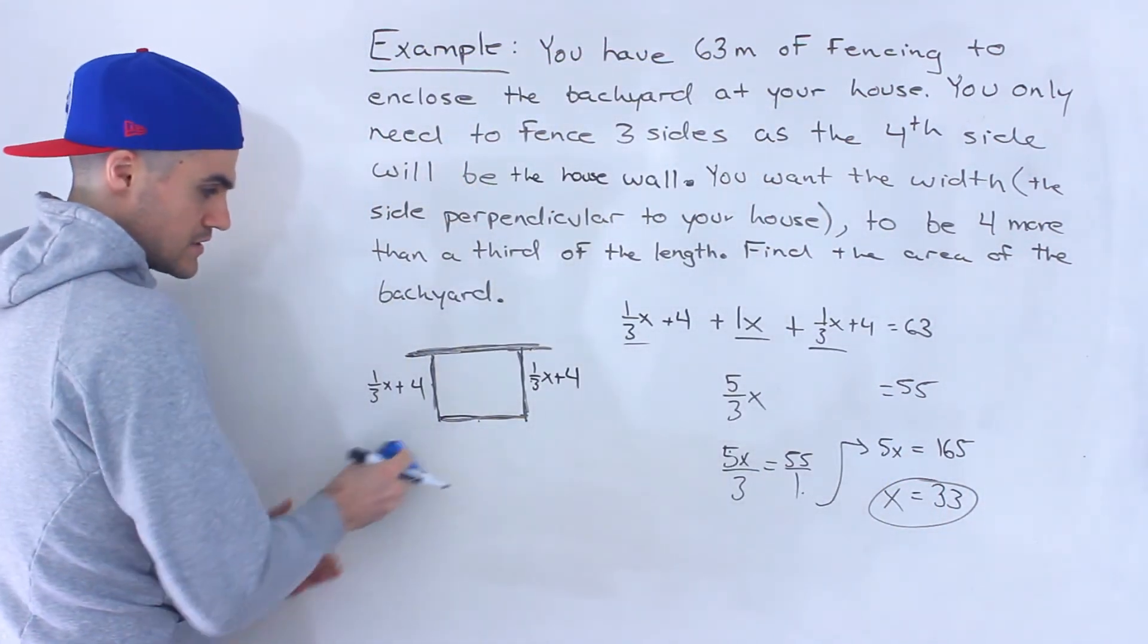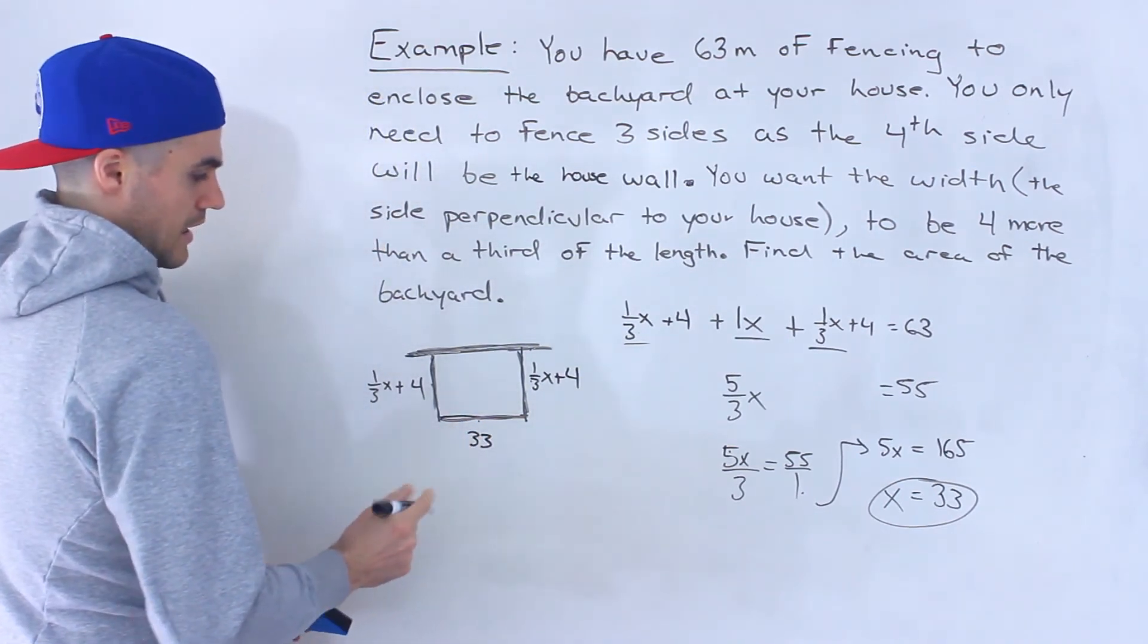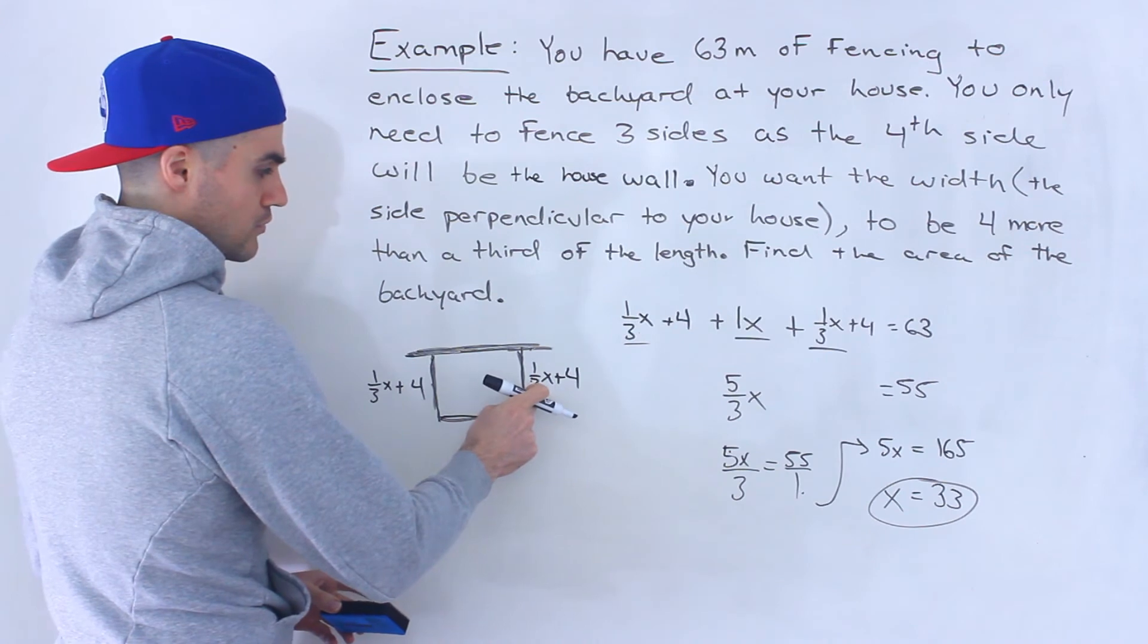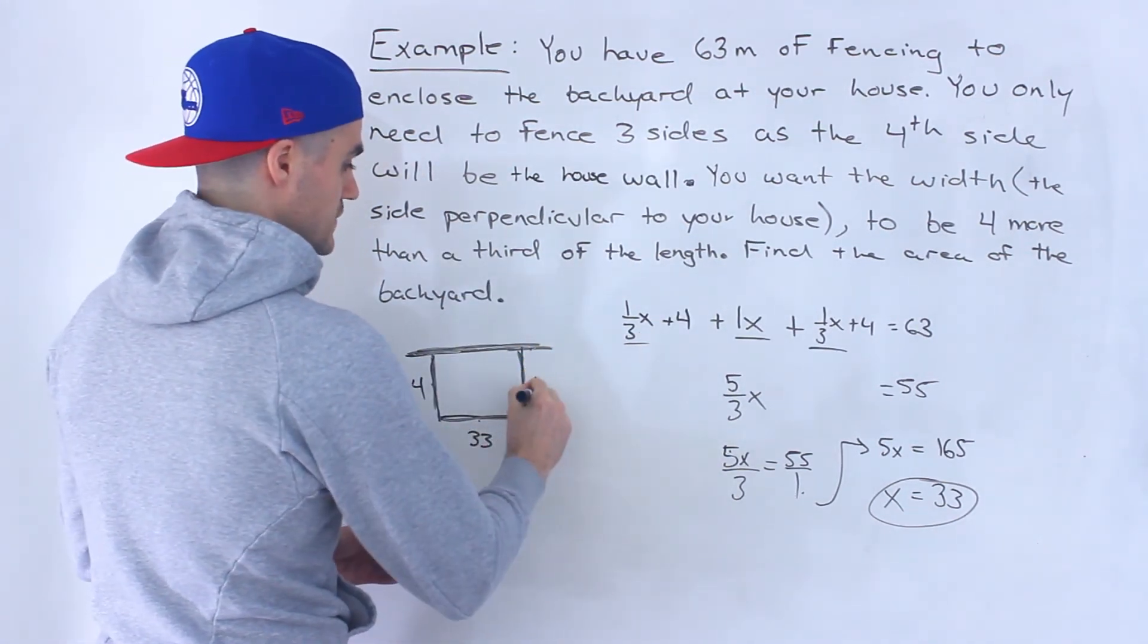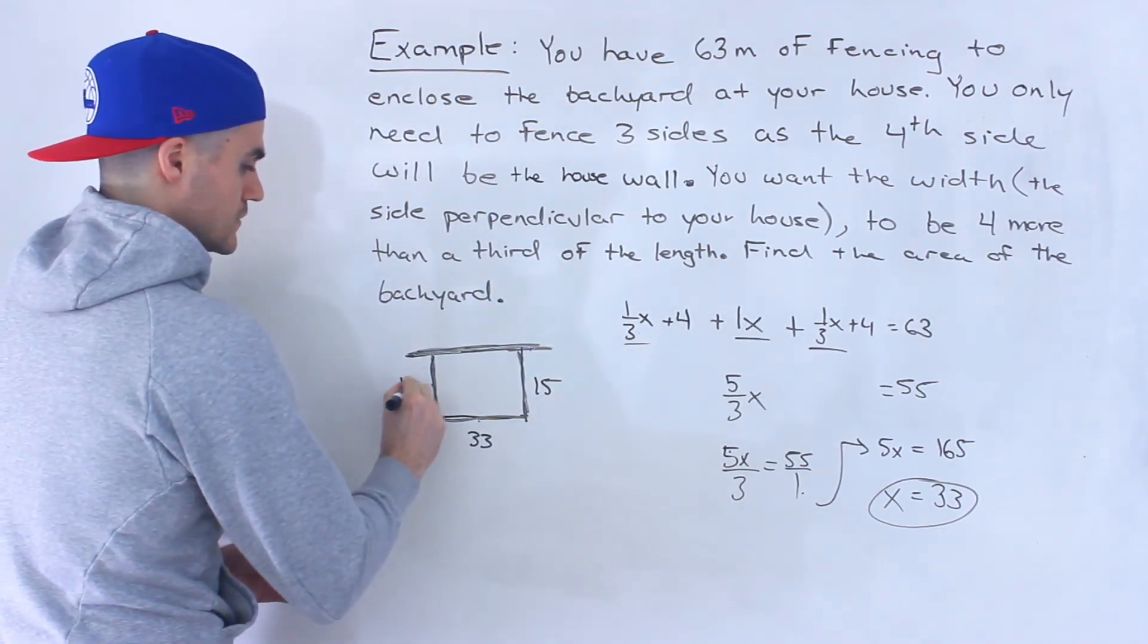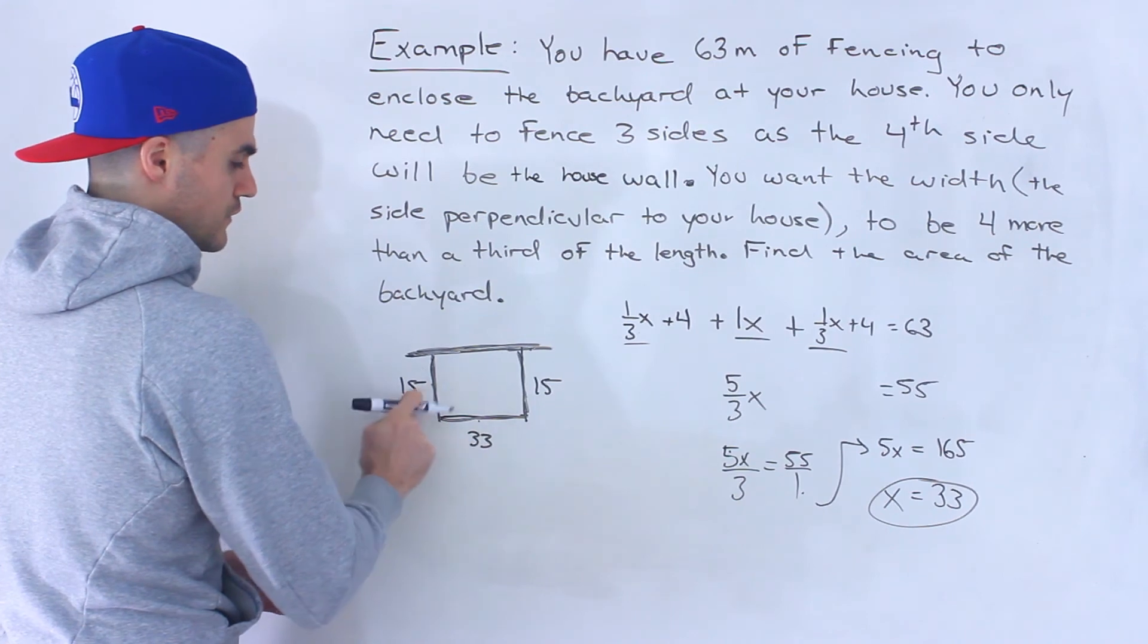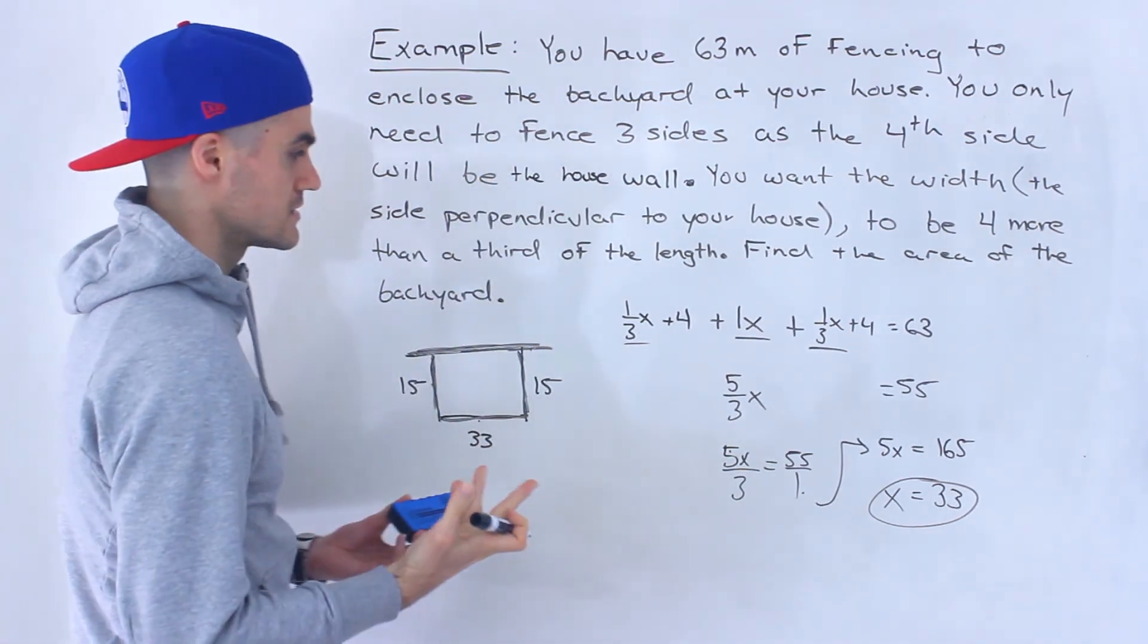So notice this here is 33. And then notice 33 times one over three is 11, plus four gives us 15. So that would be 15 and then 15. And then notice if you add these up, 15 plus 15 is 30, plus 33 does indeed give us 63.